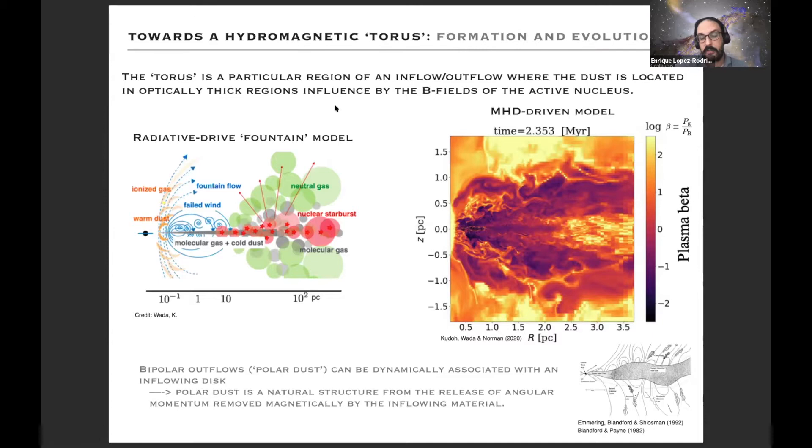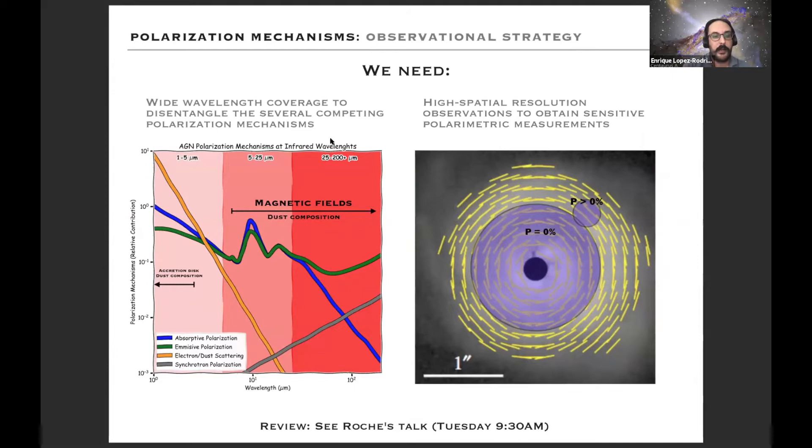So if we follow this model, how do we measure magnetic fields? As APAR Roach yesterday commented, in the infrared at five microns or longer, we are dominated by magnetically aligned dust grains and we don't have much contribution from electron or dust scattering which dominates at shorter wavelengths, and synchrotron emission will dominate at two millimeters or longer wavelength. So if you want to study magnetic fields, the infrared wavelength is your friend, is your best friend.